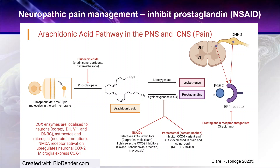In this chapter on management of neuropathic pain in the dog and cat, we're going to consider the drugs that inhibit prostaglandin — specifically the glucocorticoids, non-steroidal anti-inflammatory drugs, and for the dog only, paracetamol, which is often referred to as acetaminophen in countries such as the USA.